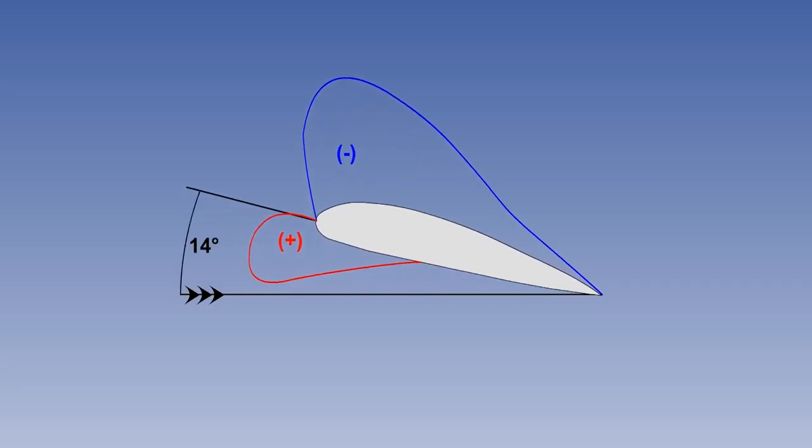At about 14 degrees, the low pressure peak is well forward, and the high pressure area under the wing is greater, adding to both lift and drag.